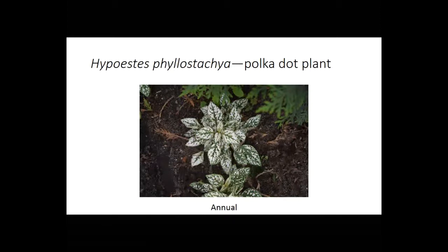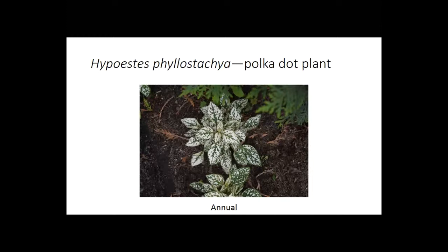You don't have to just plant perennials — annuals can certainly supplement them. Polka dot plant has been around for a while and comes in several colors, including a nice white appearance. It's very economical; you can buy a four-pack and plant quite a few, and they'll form a nice ground cover.